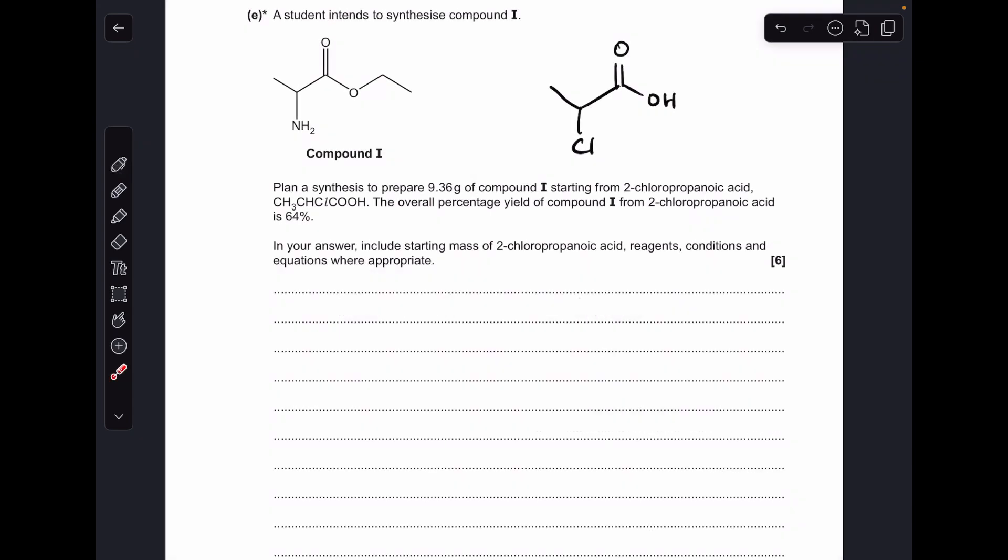And finally, part E, the synthesis question. You'll see I've drawn up the starting material, 2-chloropropanoic acid, and we've got to turn that into this. So you can see, what do we need to do? We need to get rid of the Cl and replace it for an NH2 group, and then we need to basically turn this carboxyl group into an ester group.